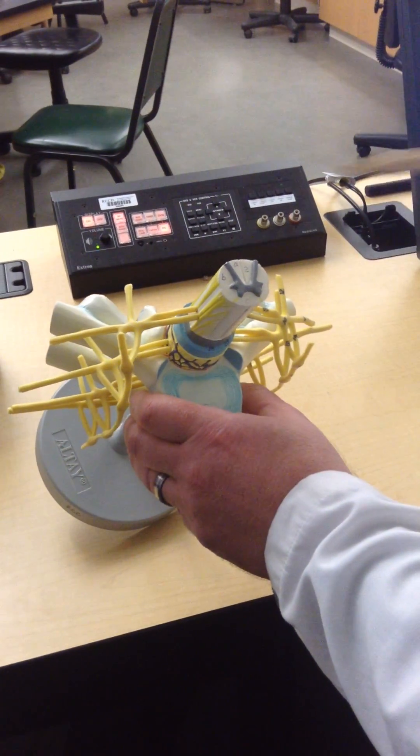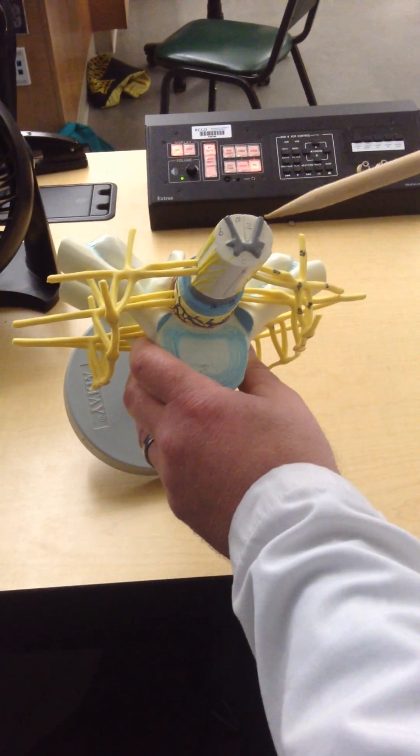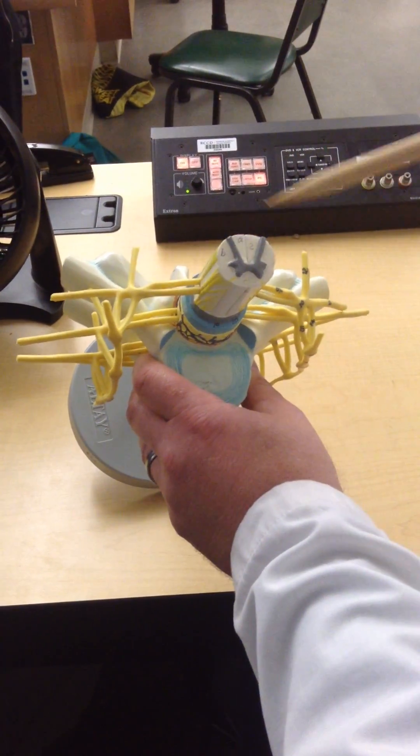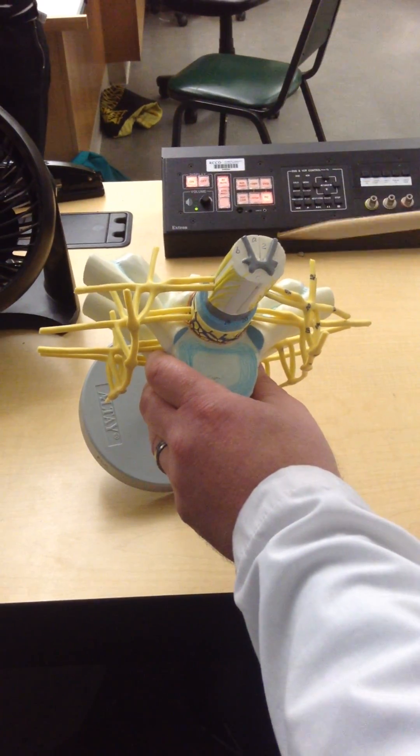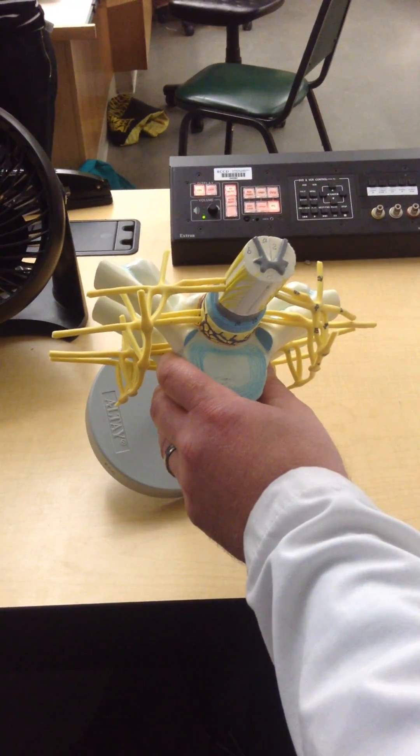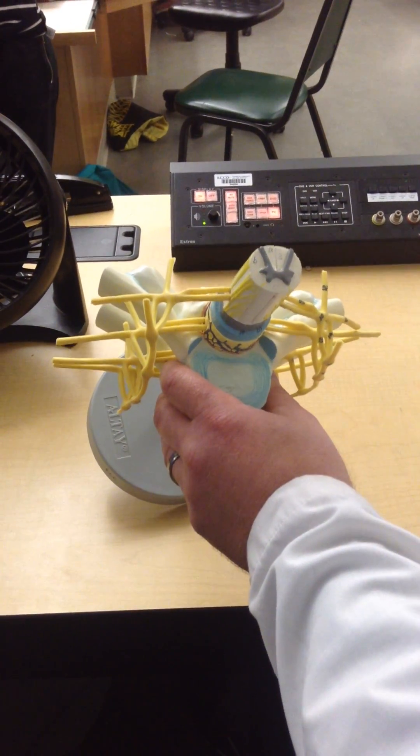The ones that are coming in are unipolar sensory neurons that are going to be synapsing or at least entering through the dorsal horn of the gray matter. And as they do, they're going to synapse with multipolar association neurons and either ascend in tracts up to the brain or brain stem.